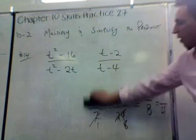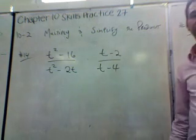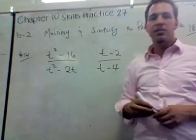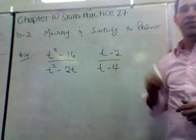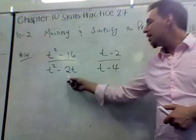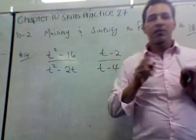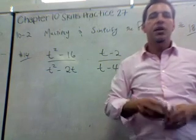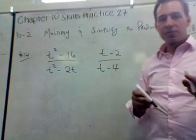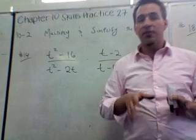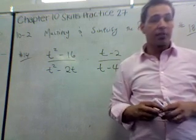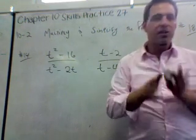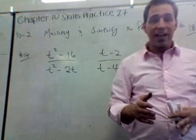So we have t² minus 16 — a difference of squares that everybody should recognize — and a term with a common factor of t. You really have to factor first and then cancel. If you get the factoring right, everything else falls into place. That's how these questions are designed. If you're having trouble, go back to Chapter 6, learn factoring, watch the YouTube videos — whatever it takes — because once factoring is solid, this chapter rolls really easily.